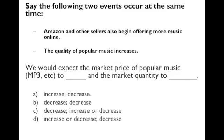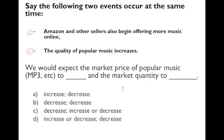Same type of question — let's do another practice. First change: Amazon and other sellers begin offering more music online. There are a lot more sellers, so there's less competition, the price goes down, and the quantity goes up — supply shifts to the right.